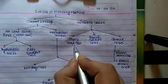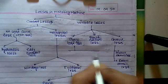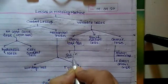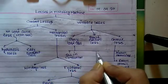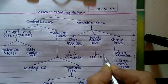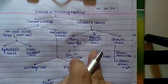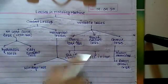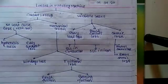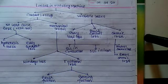Stator load loss has two parts: stator load loss in the conductor and stator load loss in the iron. These are the main losses in rotating machines. Thank you.